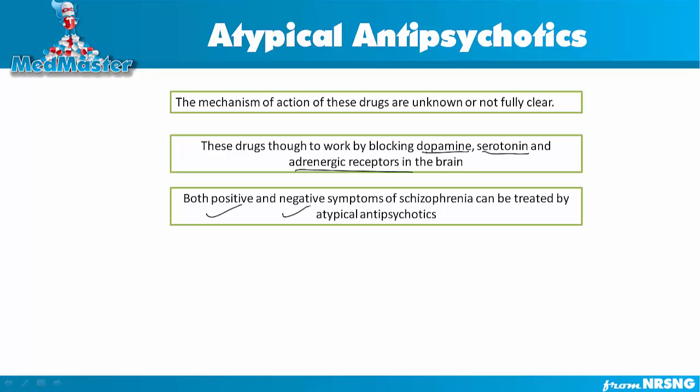When looking at side effects, it's important to understand dopamine. Dopamine is a neurotransmitter in the brain that works for balance, muscle movements, and muscle coordination. If there is a deficiency of dopamine in the brain, it will impair coordination of all muscle movements. Since this drug blocks dopamine, you will see side effects like muscle coordination problems and gait problems.